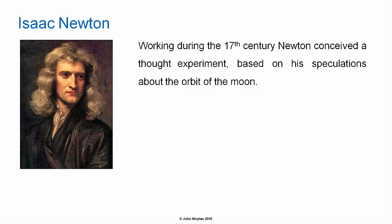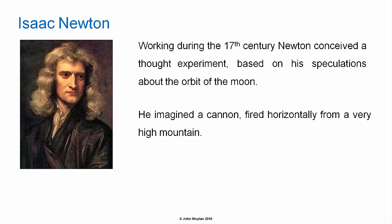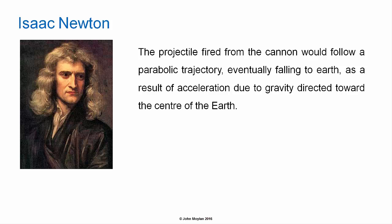Working during the 17th century, Isaac Newton conceived a thought experiment which was based on his speculations about the orbit of the moon. He imagined a cannon fired horizontally from a very high mountain. The projectile fired from the cannon would follow a parabolic trajectory, eventually falling to the earth, as a result of acceleration due to gravity directed towards the center of the earth.